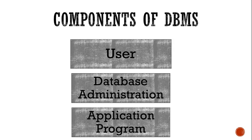What are the components of DBMS? First of all there is a user. What is a user? A user is a person who can access the data by using a DBMS, and that user is also called a database user. Then there is an administrator, that is a database administrator. Who is this person? It is the person who directs and performs all activities related to maintaining a successful database environment — responsibilities like designing, implementing, maintaining the database system and providing security and training to employees.